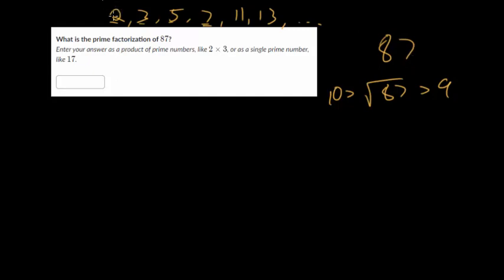So we know 2 doesn't work, so then we go to 3. And this number is actually divisible by 3. And the way to tell is you can add the digits. So 8 plus 7 is 15. And when you add them together, if you get a sum that is itself divisible by 3, then the original number is divisible by 3.